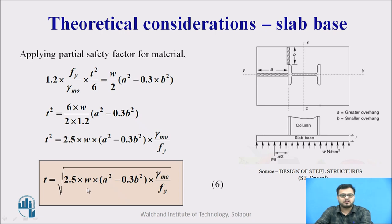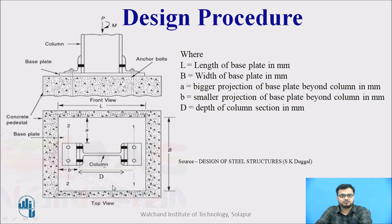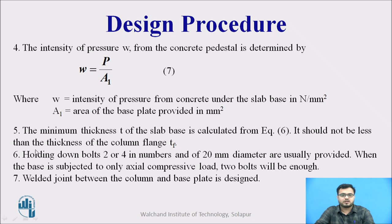The thickness of the base plate is calculated using equation 6 and checked against the flange thickness. For the slab base, 2 to 4 holding down bolts of 20 mm diameter are provided. When the base is subjected only to axial compressive force, 2 bolts are sufficient. If it is not purely axial, 4 holding down bolts are provided. If subjected to moment, the welded joint between the column and base plate must be designed.